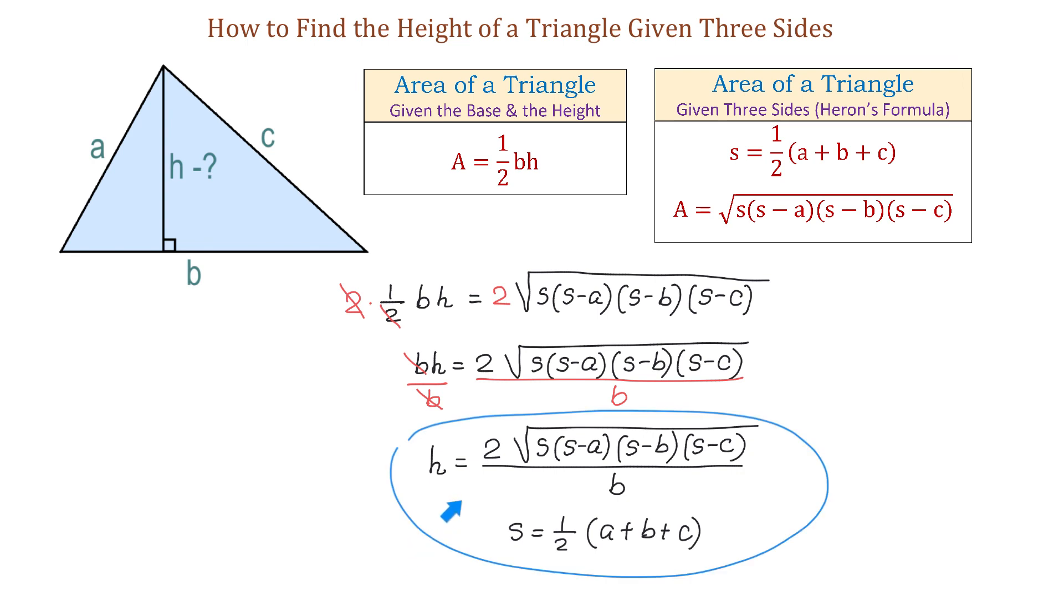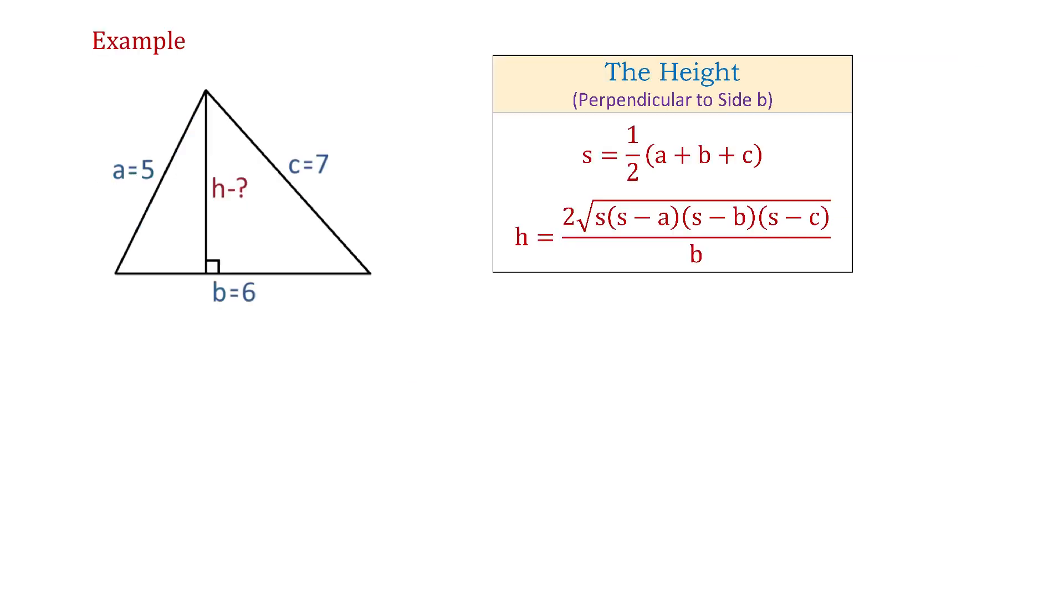And this is the formula for the height that is perpendicular to side b. Now, let's see an example. Here we have a triangle with sides of 5, 6, and 7 units. We need to find the height that is perpendicular to side b, which is 6 units.